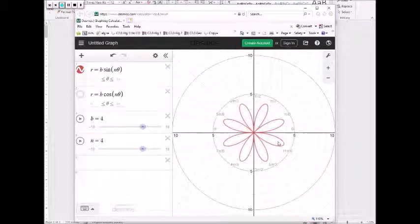So here's one, two, three, four, five, six, seven, eight. That means b is the length, four, and n is four.